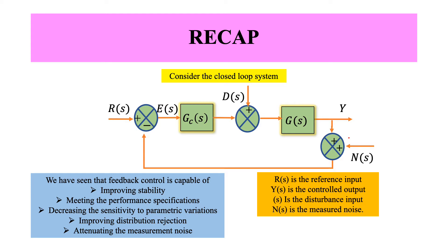So we start with this closed loop system. This feedback configuration is capable of improving stability; it also in some sense helps in meeting the performance specification. We will elaborate on this a little more shortly. We also saw how feedback helps in decreasing sensitivity to parameter variations. System disturbance injection was also very obvious while we were doing feedback control, and of course in attenuating the measurement noise and so on.